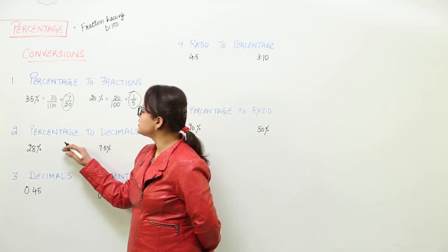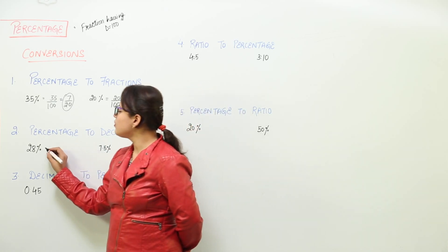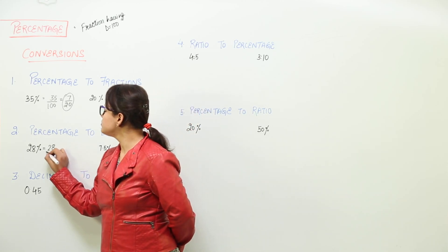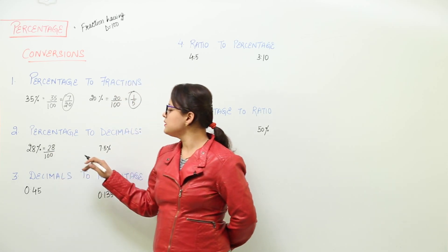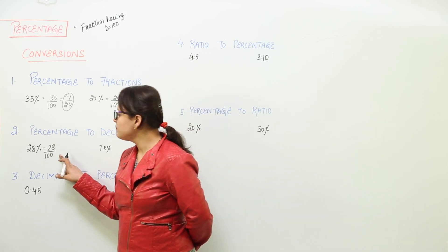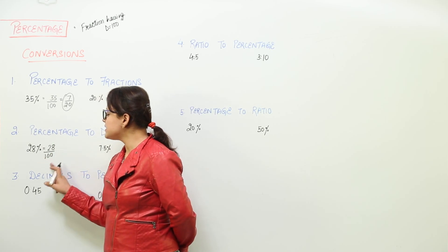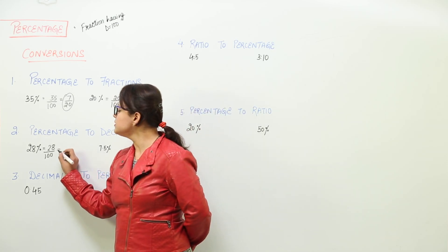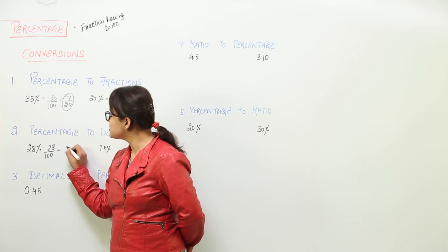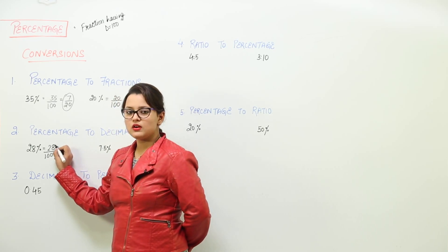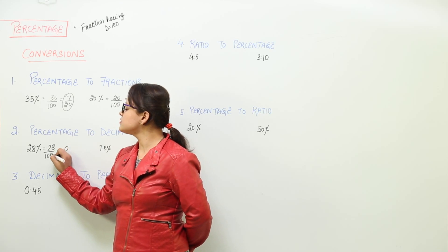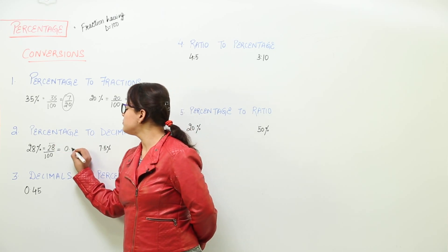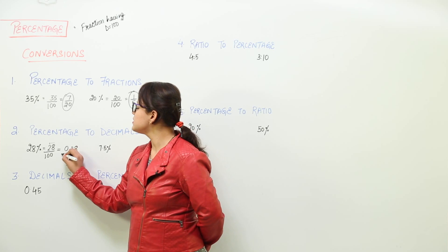Next is the percentage conversion to decimals. First, get rid of the percentage sign by putting 100 in the denominator, converting it into a fraction. This is a decimal fraction because it has a denominator in the powers of 10. We count the number of zeros in the denominator and start counting from the rightmost digit of the numerator. There are two zeros, so after two places from the right we put the decimal point, giving us 0.28.